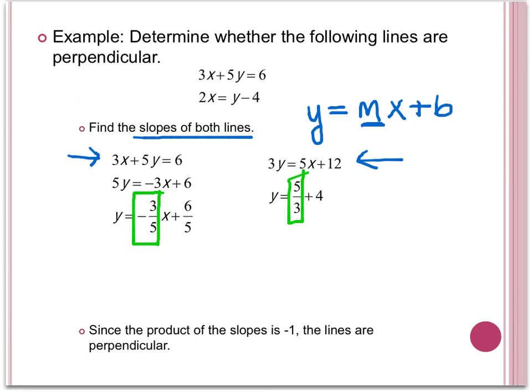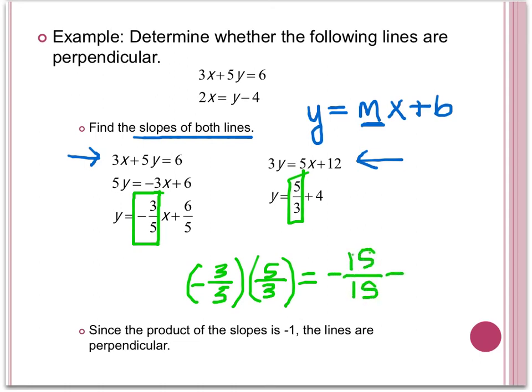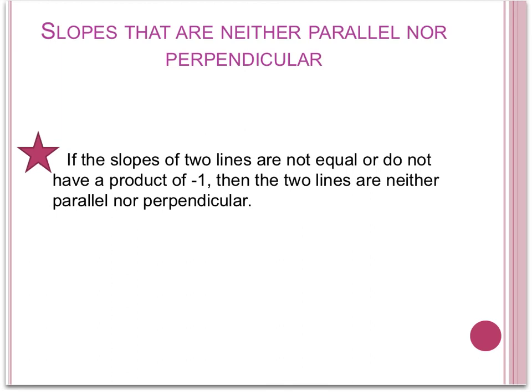In order to show that these two lines are perpendicular, we must multiply their slopes. We have negative 3 fifths times 5 thirds. When multiplying together, that equals negative 15 fifteenths, which equals negative 1. Therefore, the lines are perpendicular. Finally, if the slopes of two lines are not equal, or do not have a product of negative 1, then the two lines are neither parallel nor perpendicular.